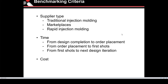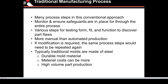With the traditional molding process, you're going to have many steps to monitor and ensure safeguards throughout the process, which extends the lead time of the tool and getting parts in hand. There are various steps for testing form, fit, and function to discover part flaws. It's more of a manual process than automated. Traditional molds are typically made from steel, either P-20 or S-7 — hard materials that take longer to cut, have higher material costs, and are dedicated more for high-volume part production.